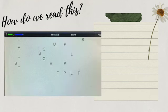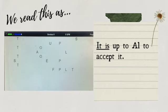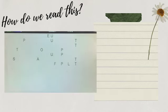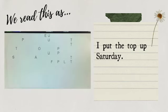Now let's try to answer this. How do we read this sentence? You're given three seconds. Three, two, one, zero. I know you will get it right. The correct answer: 'It is up to all to accept it', period. I know you got it right. Let's have another one — three seconds. Three, two, one, zero. The correct answer is: 'I put the top up Saturday', period. I bet you got it right again. Congratulations.